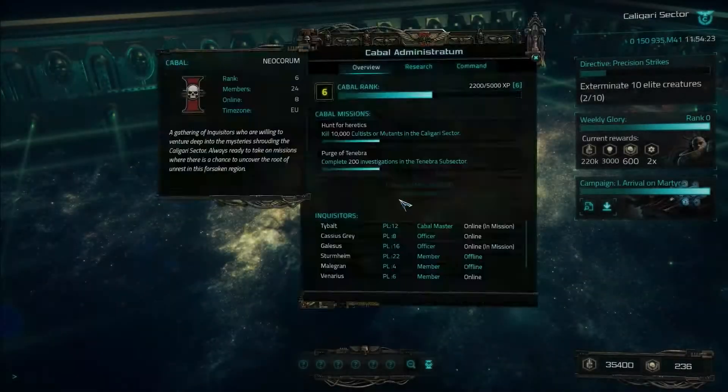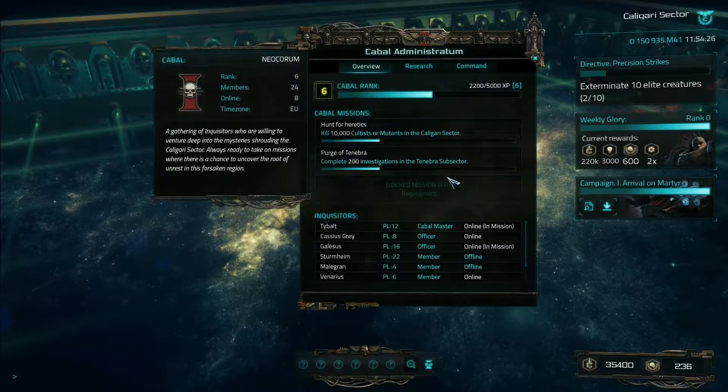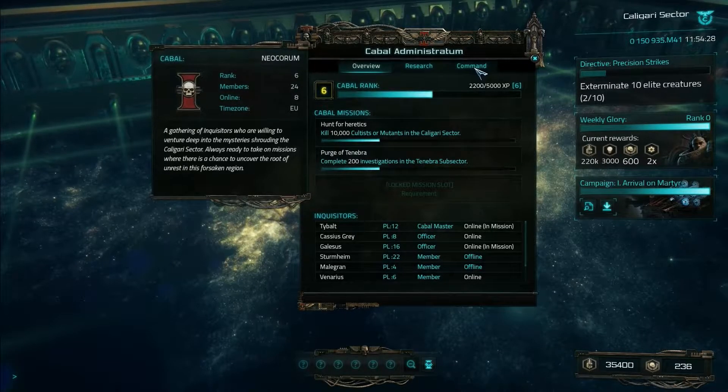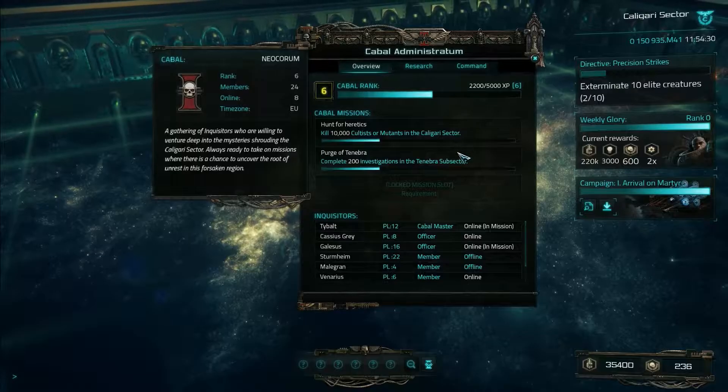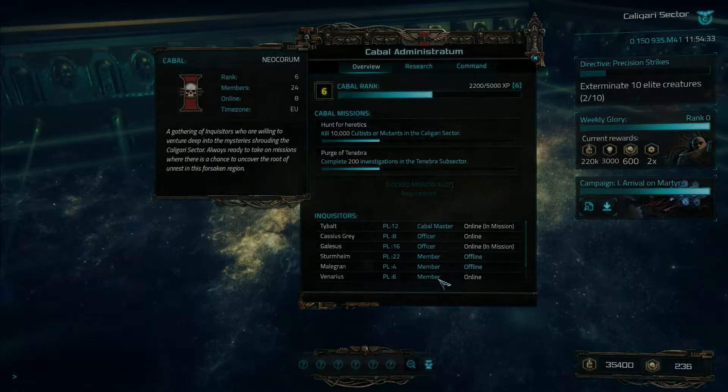The Conclave is an assembly of power groups with various goals. Player Inquisitors can also form Kabals, that can have their differences from time to time, which leads to clashes in the Shadow.